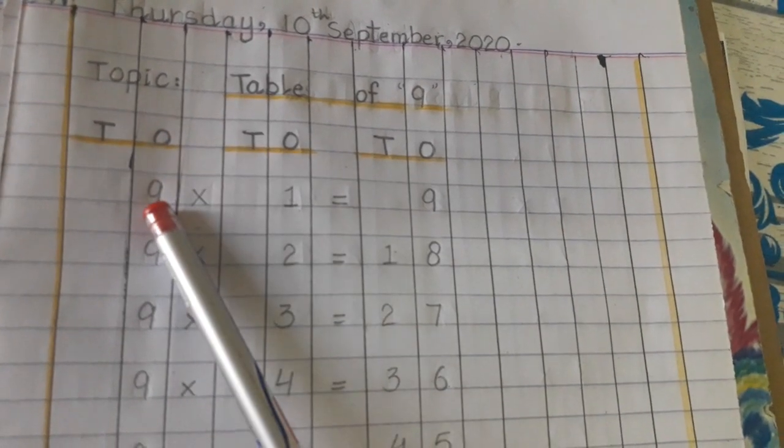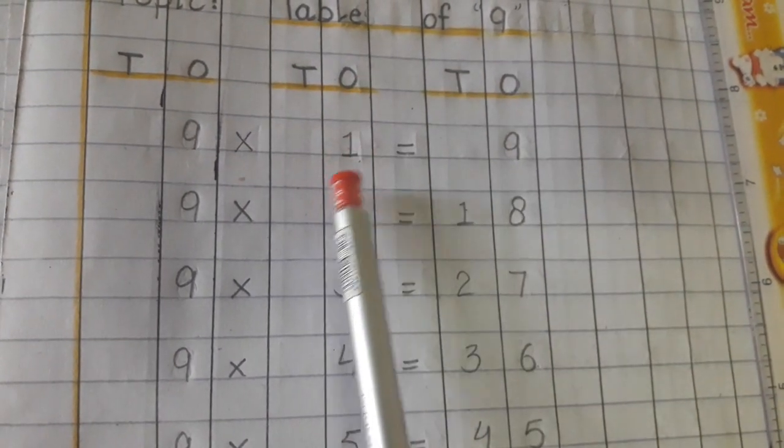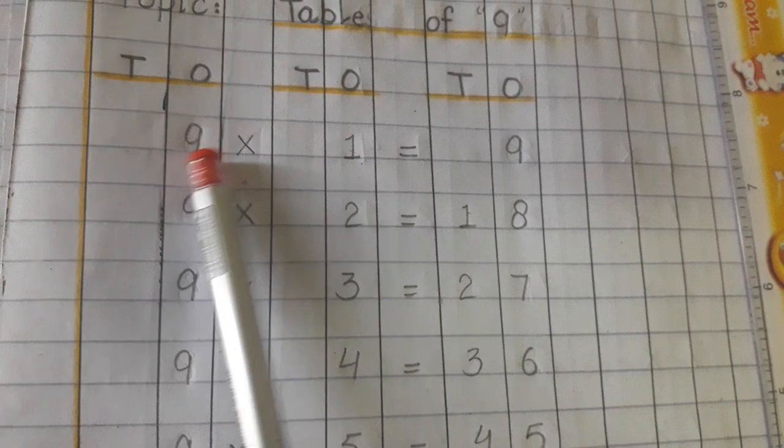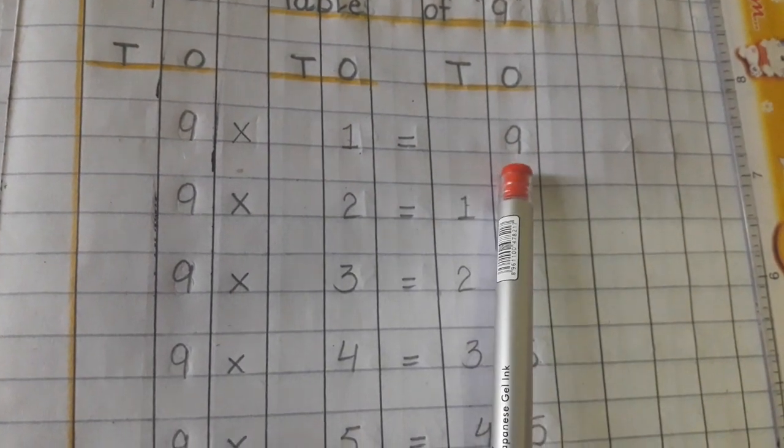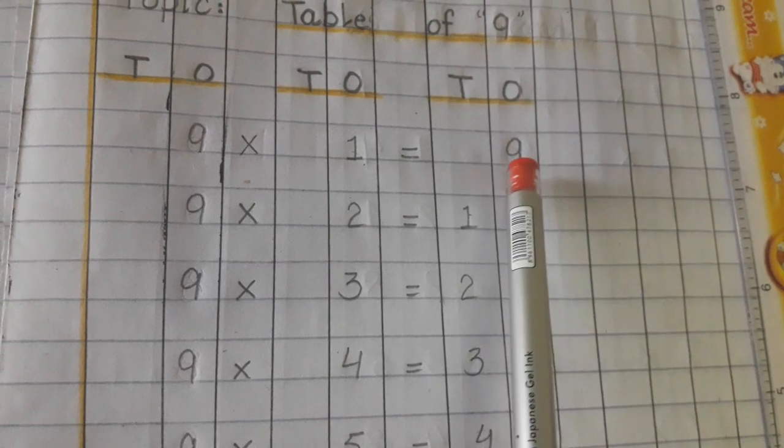So nine multiply one, we will also write one in the ones column because it is one number, one digit. Nine ones are nine. Again we will write it in one column because it is one digit. Nine ones are nine.